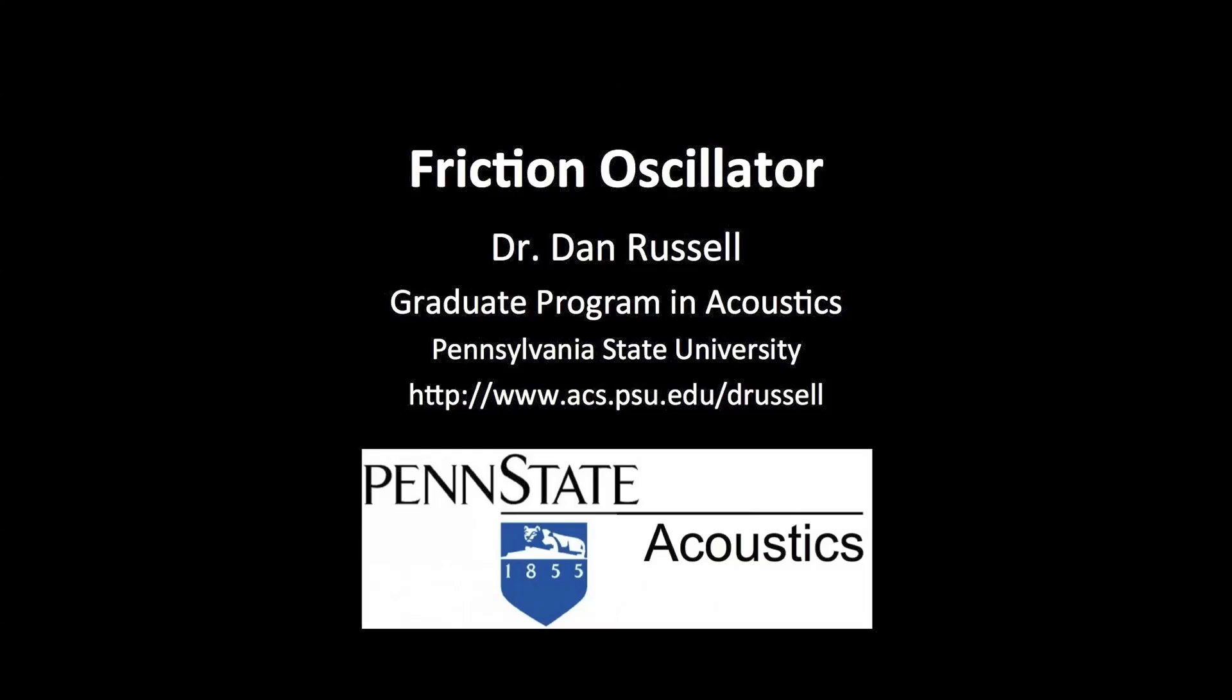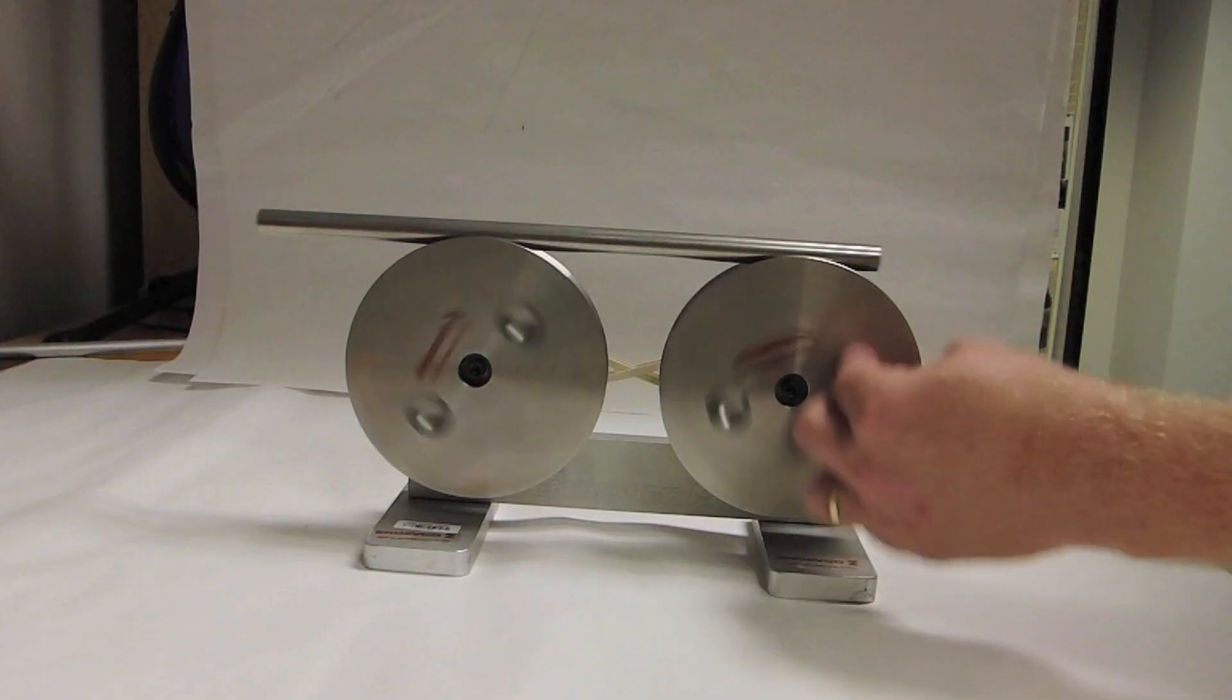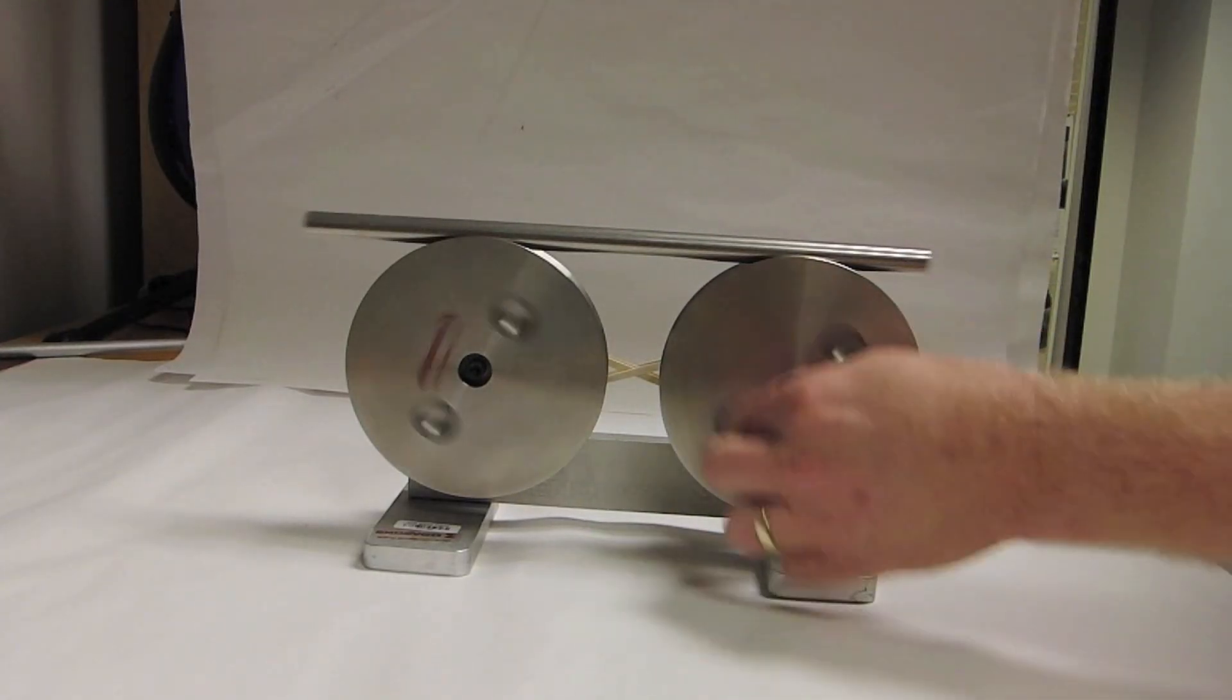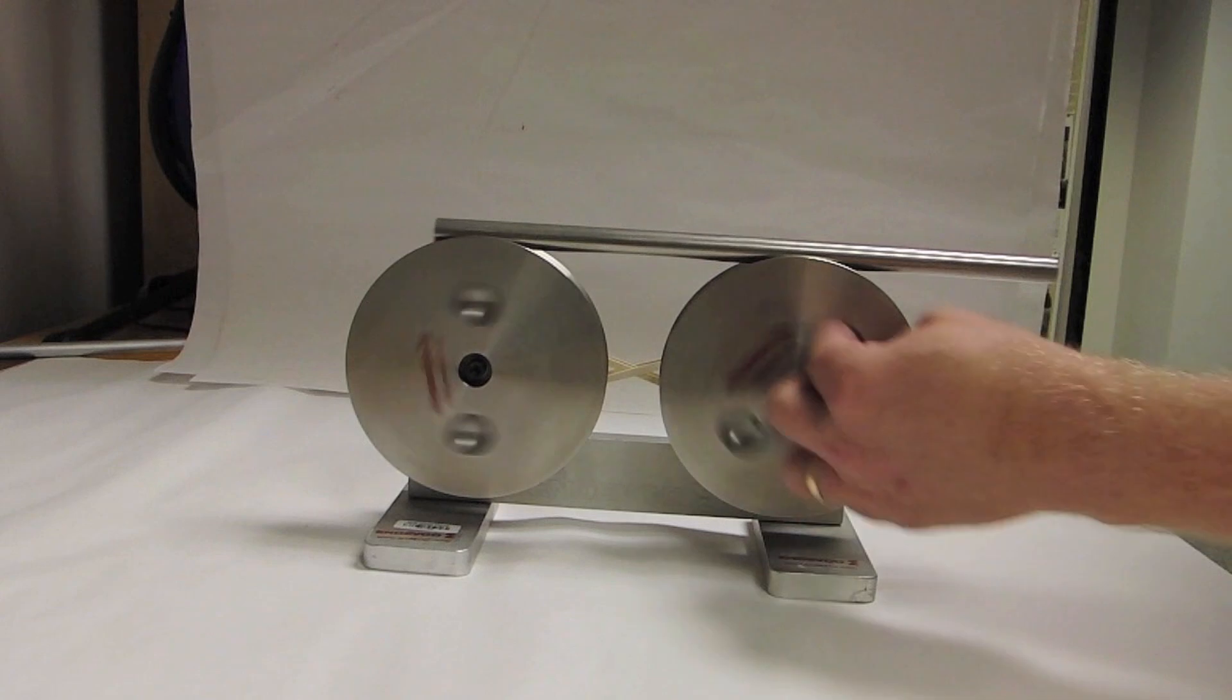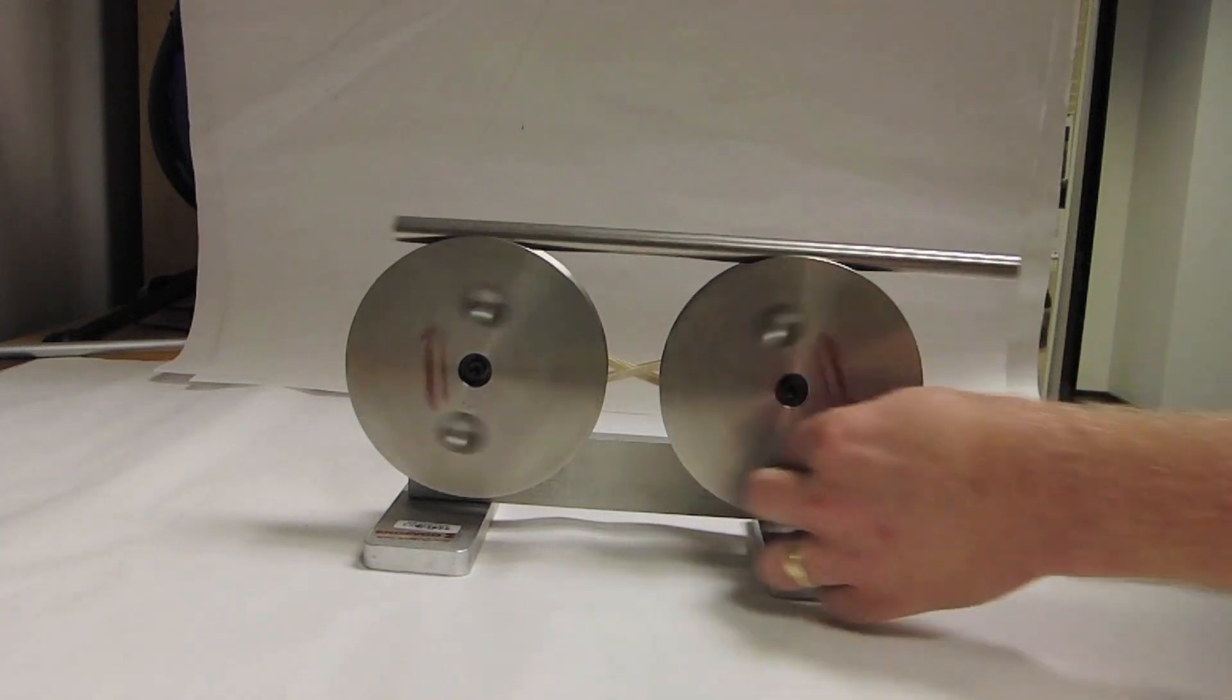Friction in an oscillator usually provides a damping mechanism that removes energy from the system and causes the amplitude to decay. Here's an interesting oscillator for which the friction provides the restoring force that causes the system to oscillate.